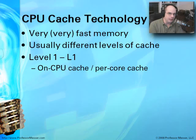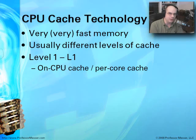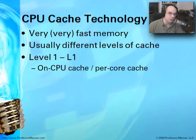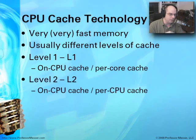You'll hear the term level one cache, often referred to as L1 cache. It's often on the processor itself. Although if you ever look at a processor it's just a square block, there are actually many, many different pieces in there. This level one cache memory is usually right there on the chip, and it's often on a per-core basis as well. If there is a processing unit, there is almost always, these days, an L1 cache associated with it.